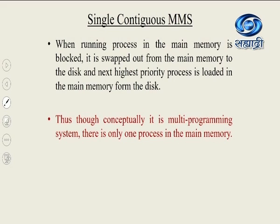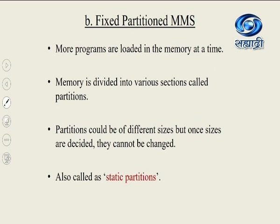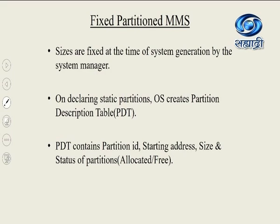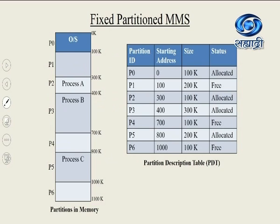The second type is fixed partition MMS. In this, more programs are loaded in the memory at a time. Memory is divided into various sections called partitions. Partitions could be of different sizes, but once sizes are decided they cannot be changed — that is why it is also called static partitions. Sizes are fixed at the time of system generation by the system manager. On declaring static partitions, the operating system creates a partition description table — PDT — which contains all the information related to partitions.